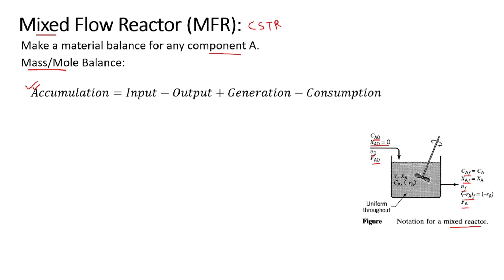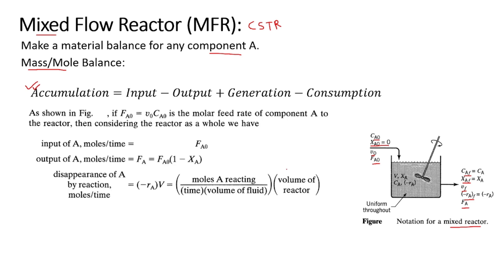F_A0 equals v_0 times C_A0. In my previous lectures I explained that the volumetric flow rate v_A of a component equals the feed flow rate divided by the concentration of that component — written as F_A divided by C_A. By transposition, F_A equals v_A times C_A. So for the input component, F_A0 equals v_0 times C_A0.